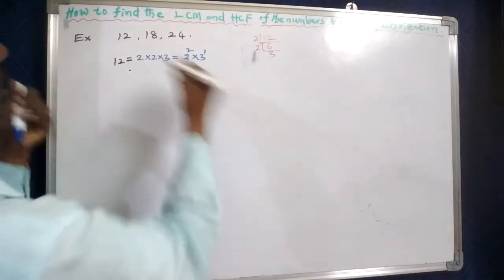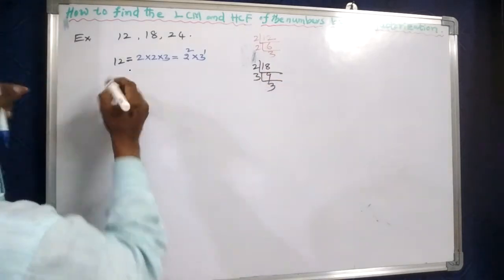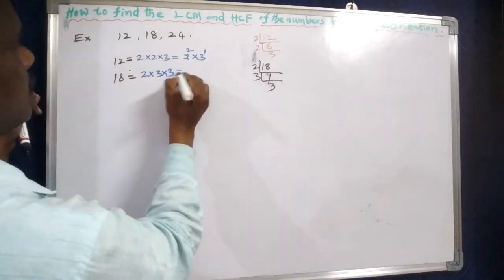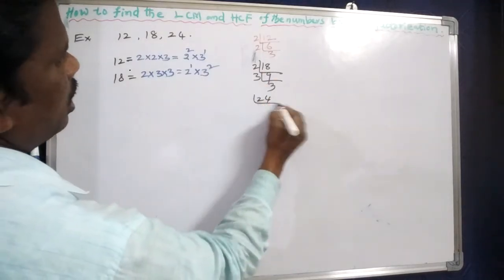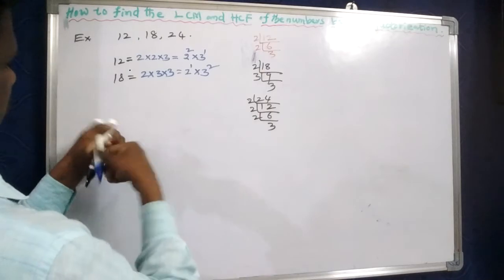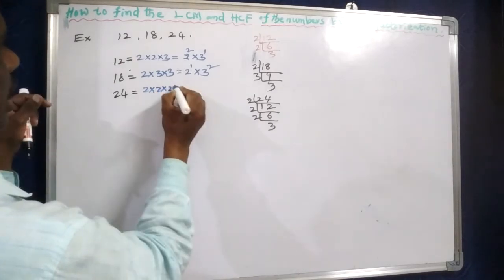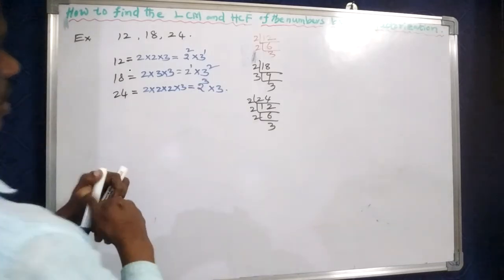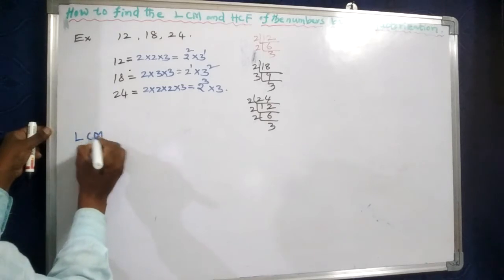Next, 18 is equal to 2 into 3 into 3, which is 2 to the power of 1 and 3 squared. Next, 24 is equal to 2 into 2 into 2 into 3, and in exponential form that is 2 cubed into 3 to the power of 1.